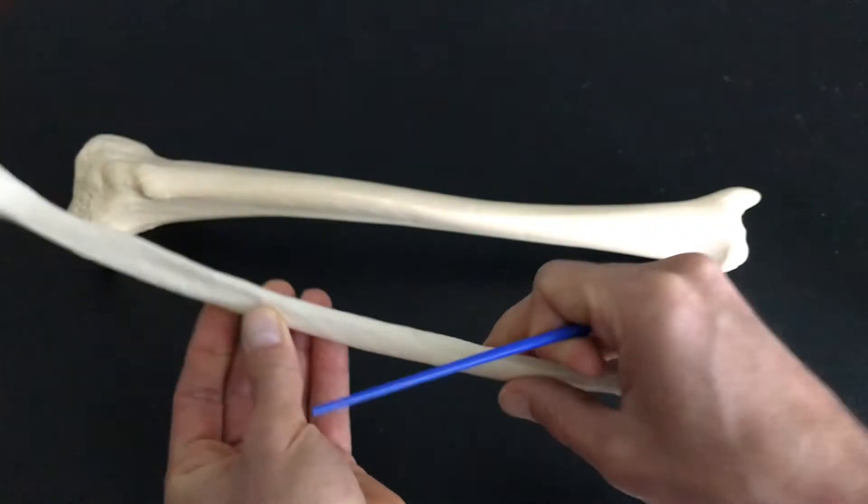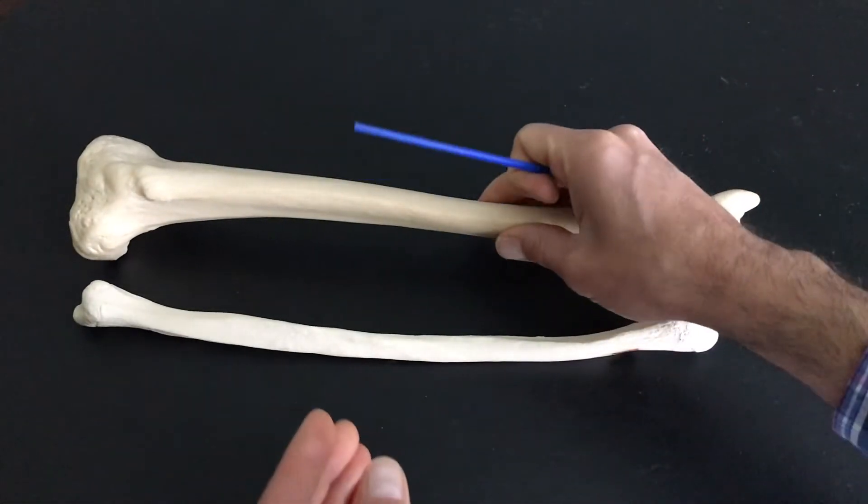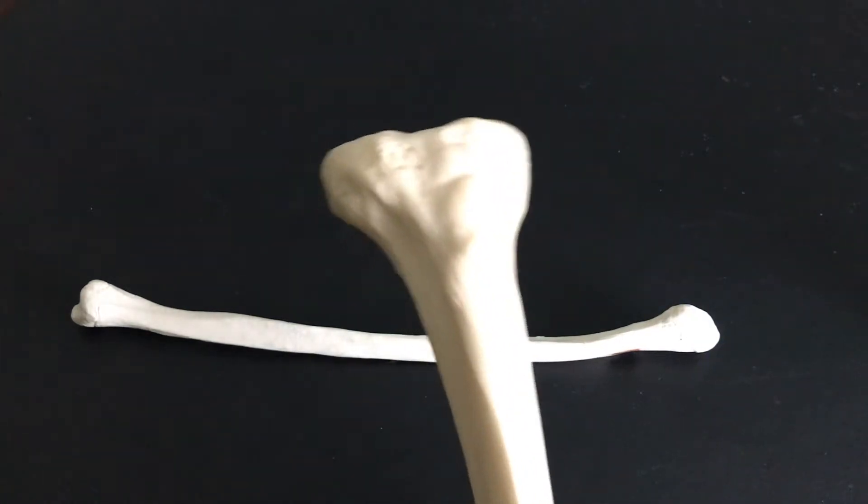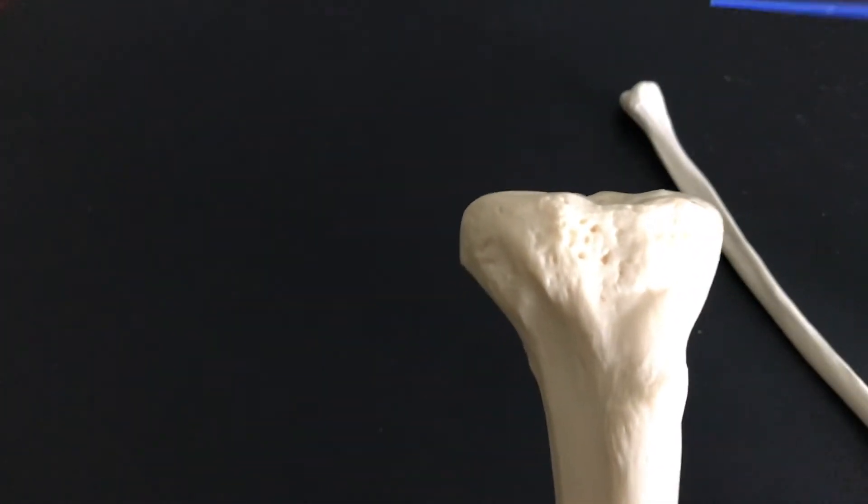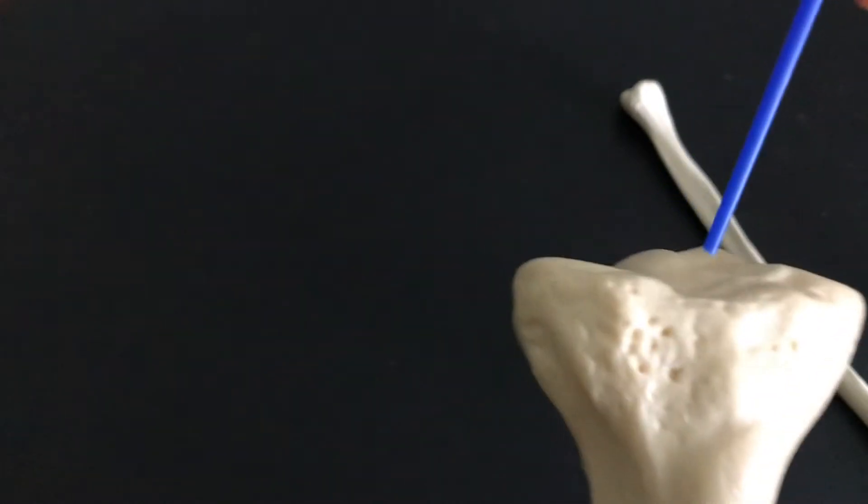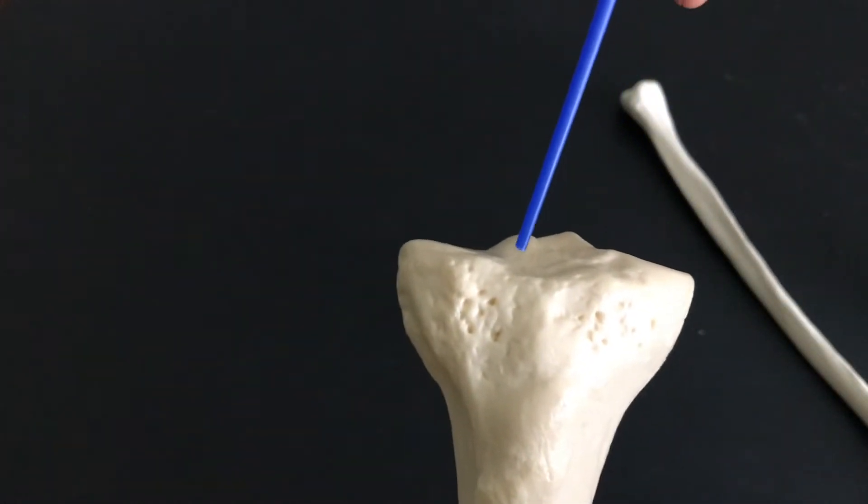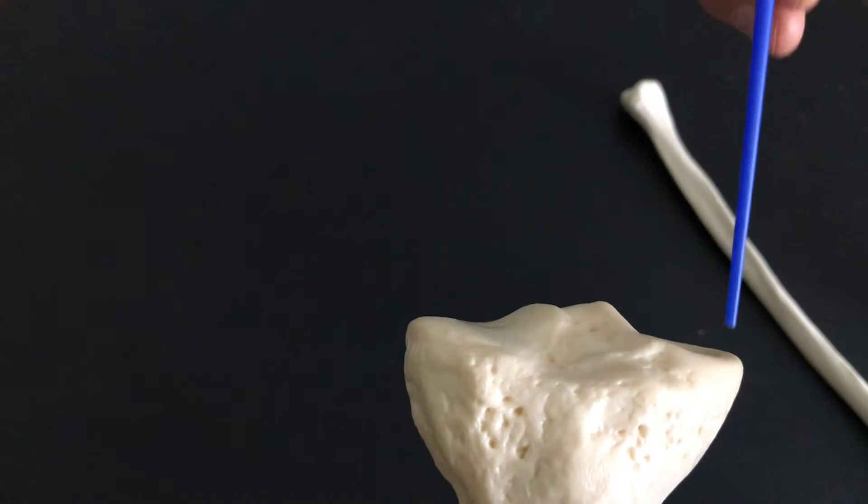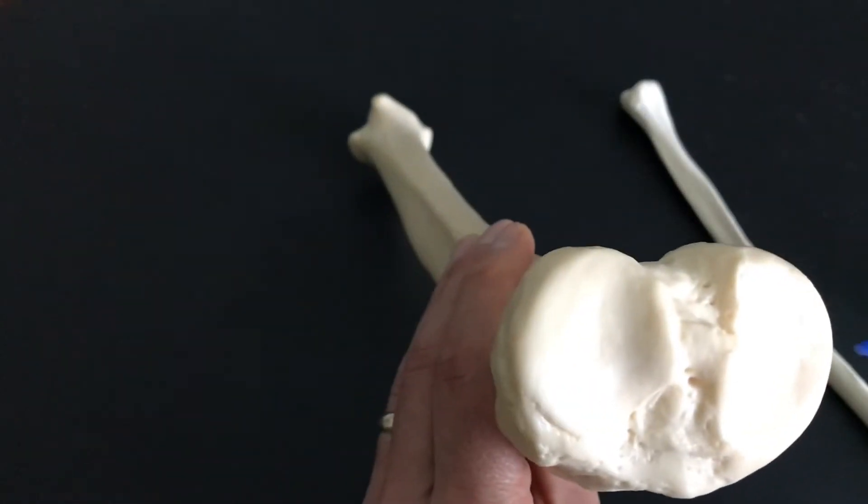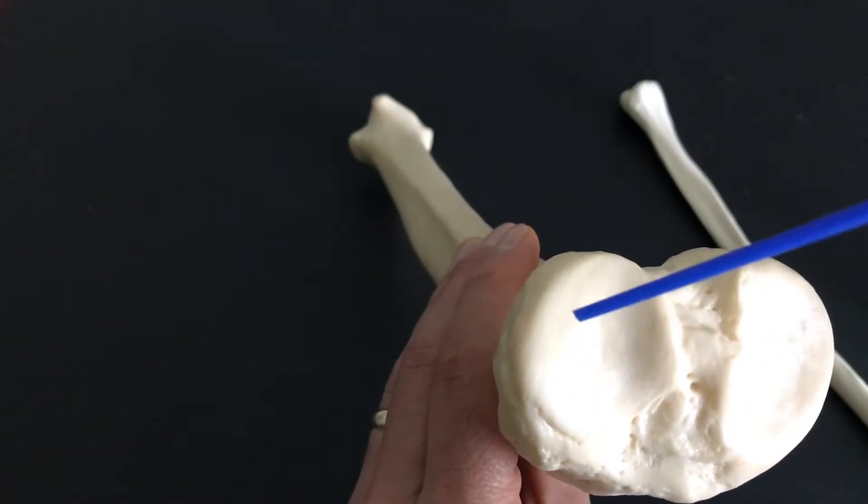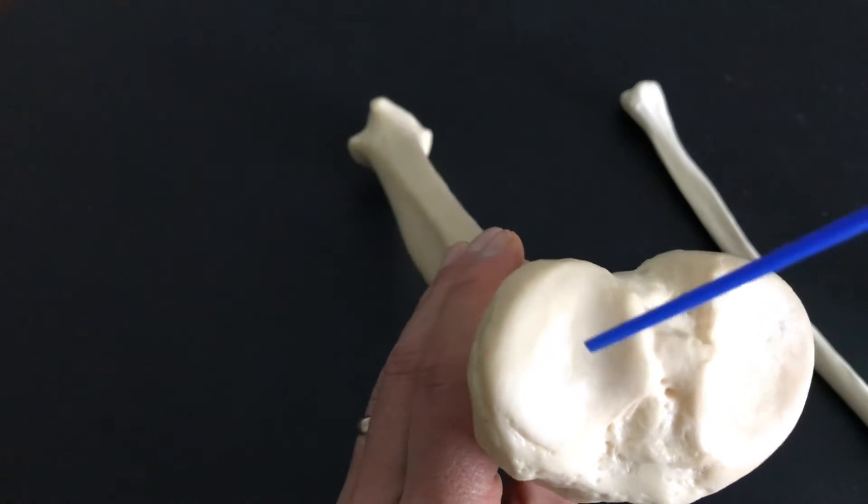If we look at the tibia, this is an anterior view. We're looking at the superior end of it, so your femur, the condyles of your femur, are going to sit right here. In fact, if I move it this way, you can see these two smooth surfaces. We call these the articular surfaces of the lateral and medial condyles.